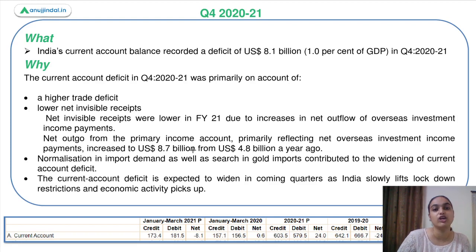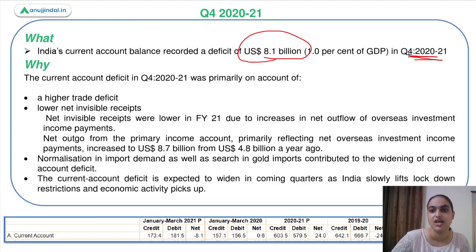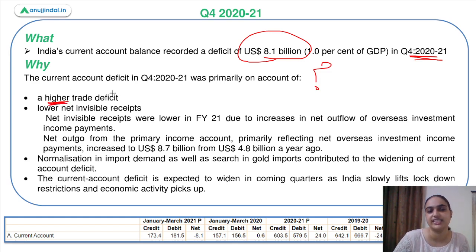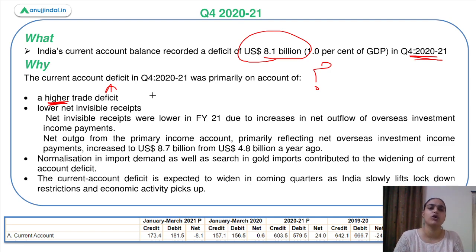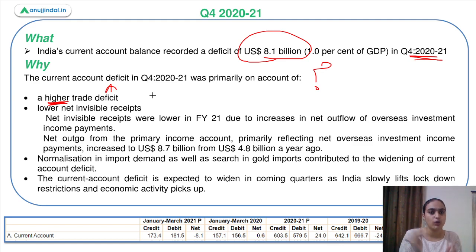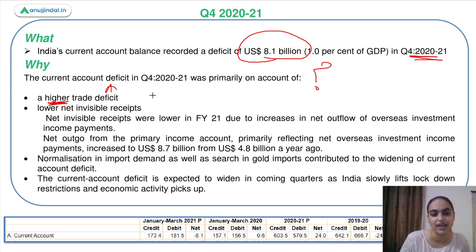Moving to the quarterly results — the current account balance recorded a deficit in the fourth quarter. One major reason is that higher trade deficit led to a current account deficit. Overall for the entire year, there was a sharp contraction in trade deficit. But then we saw normalization in the economy — exports and imports began again, import demand came back to normal, and as the COVID-19 impact reduced, economic transactions came back on track, widening the trade deficit and thereby the current account deficit.